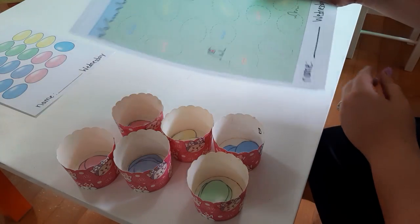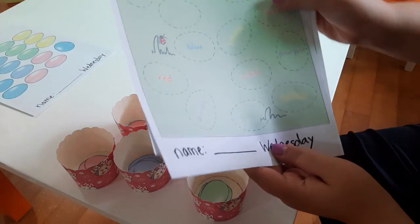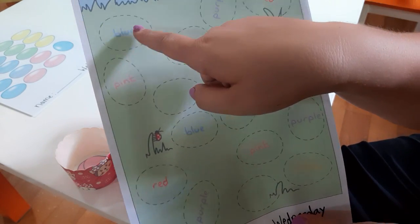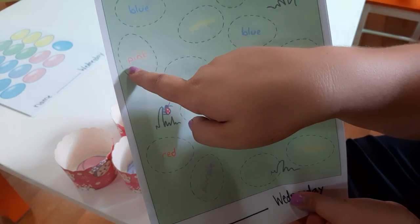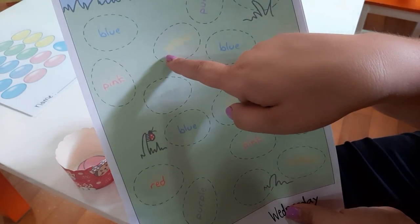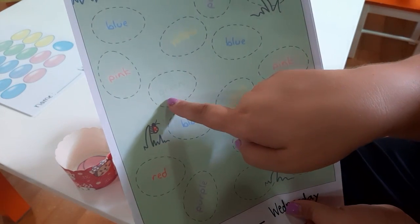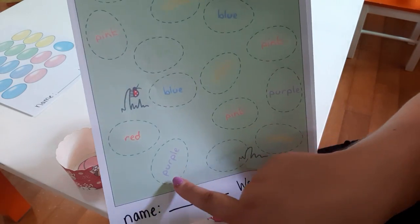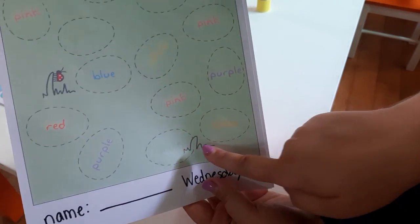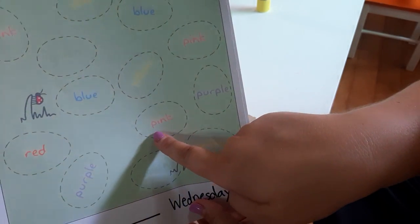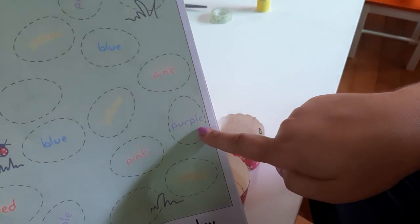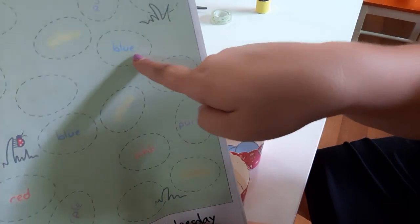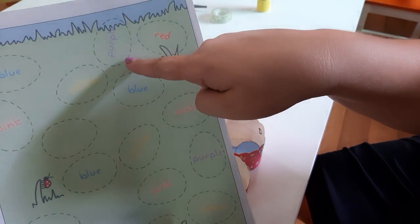So, let's read the sheet. Blue. What color is this? Blue. What color is this word? Pink. Yellow. Green. Blue. Red. Purple. Green. Yellow. Pink. Purple. Pink. Yellow. Blue. Red. Purple.